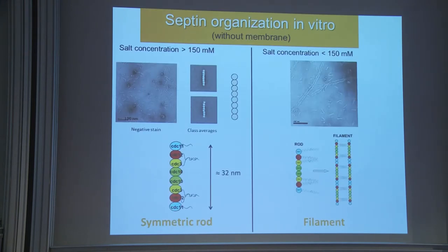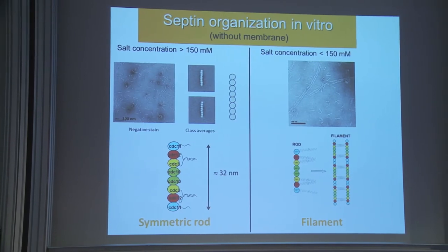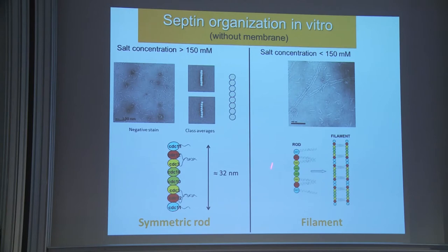From a structural point of view, what we know about septins is that they assemble in vitro in high salt concentration as an octamer with a symmetry — an octamer which is around 32 nanometers in length — and by decreasing the salt concentration or by interaction with membrane, septins organize as paired filaments, and they de-polymerize to form longer filaments.